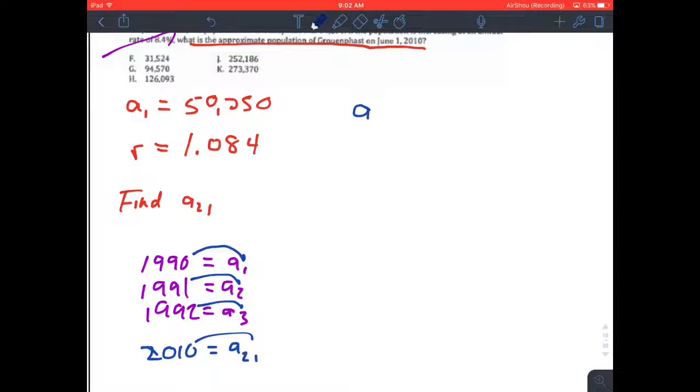So our formula once again is A to the N. That's the Nth term is A to the 1st times the rate to the exponent of N minus 1. We're trying to find the 21st term. Our first term is 50,250. Our rate is 1.084. Our exponent is one less than the term, so it's 21 minus 1, which is 20.